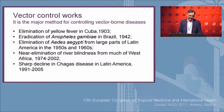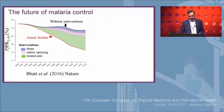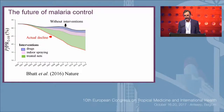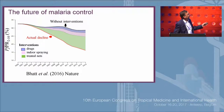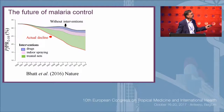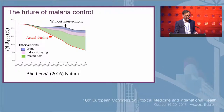Then there's the Onchocerciasis Control Programme in West Africa — an extraordinary achievement, near-elimination in some places, in a very difficult part of the world with weak health systems. There was a sharp decline in Chagas disease in Latin America with indoor residual spraying. And today, we should celebrate: something like 80% of the reduction in malaria over the last 15 years in sub-Saharan Africa has been due to vector control — through anti-malarials, indoor residual spraying, and treated nets rolled out across Africa. Vector control works.